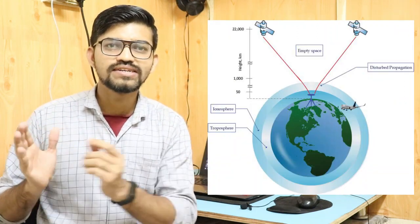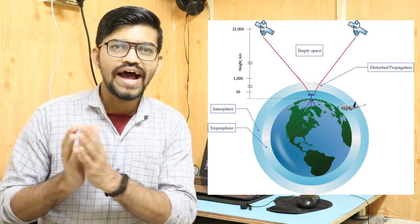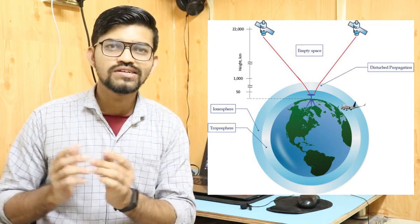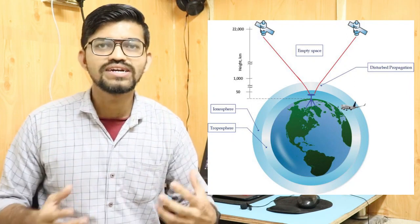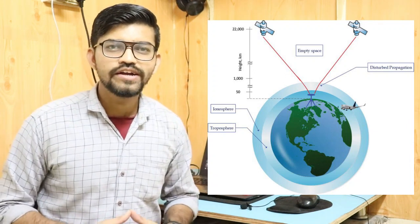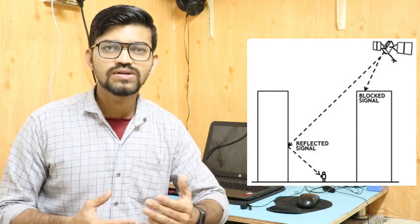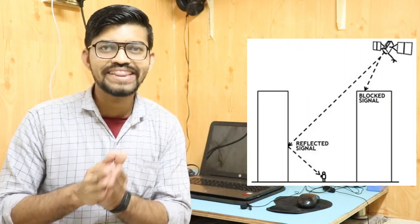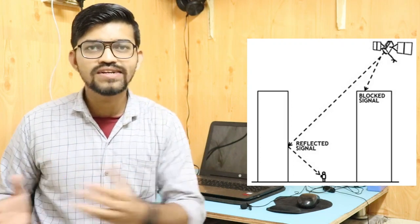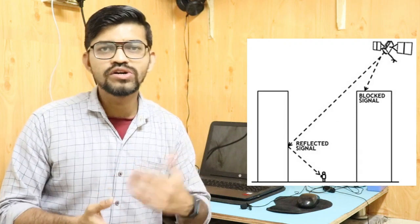GPS signals are very sensitive and travel at the speed of light in space. However, when these signals travel from the satellite toward the GPS receiver, they must cross the ionosphere and troposphere of the Earth, causing some signals to refract from their original path, which affects accuracy. Additionally, GPS signals cannot be reliably received in urban areas due to interference from cell phone and radio signals, since GPS signals are weaker than those. This means GPS accuracy is also limited indoors, under trees, and in dense urban regions.